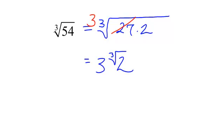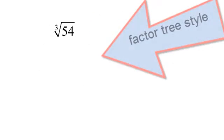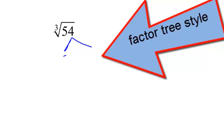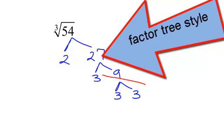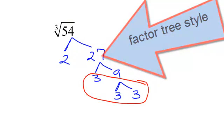Now, doing this by the factor tree, I would just change this to 2 times 27. And 27, I'd break down to 3 times 9. 9 can be broken down to 3 times 3. That's all I can break it down. And I would circle the triples of numbers. So, here I have three 3s.